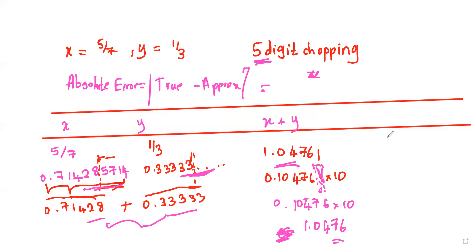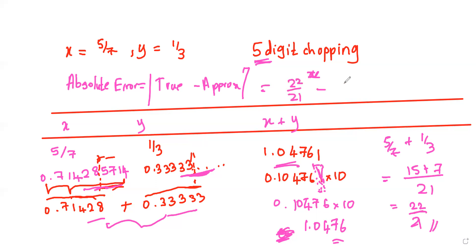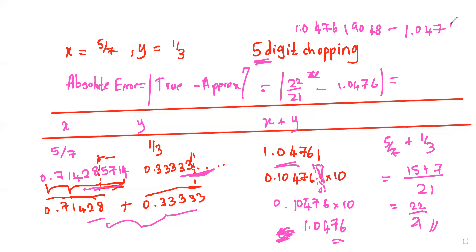The true value of x + y = 5/7 + 1/3. Simplifying: (15 + 7) / 21 = 22/21. Using a calculator, 22/21 = 1.0476190476... (continuing). So the absolute error is 22/21 − 1.0476, which equals approximately 1.9047 × 10⁻⁵ — let's round that.